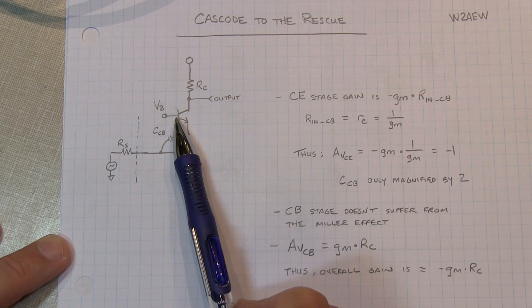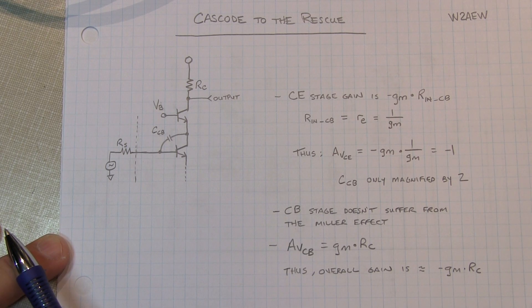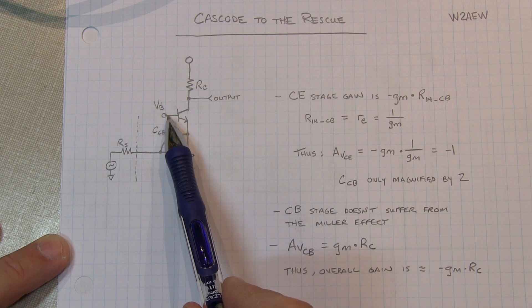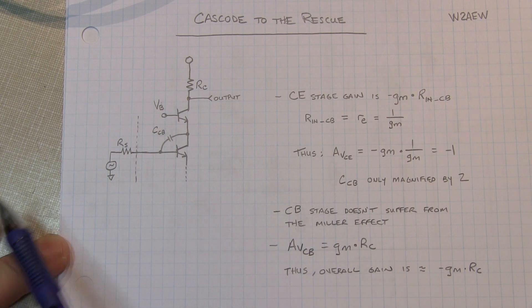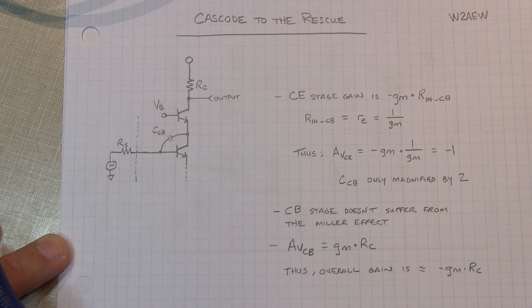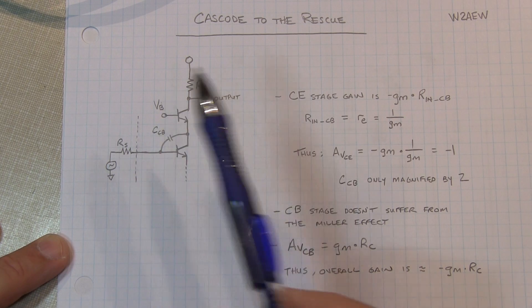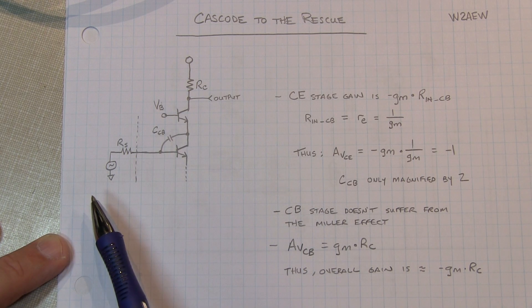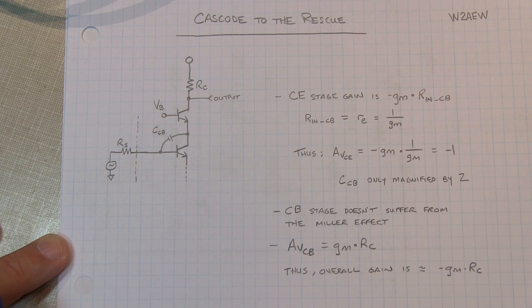Now the common base amplifier doesn't suffer from the Miller effect. Sure there's still a collector base capacitance here, but the signal doesn't appear at the base at all. So we don't get any magnification of that capacitor from essentially an input standpoint. So we're driving the input into the emitter, taking the output from the collector.